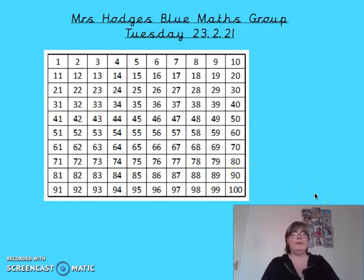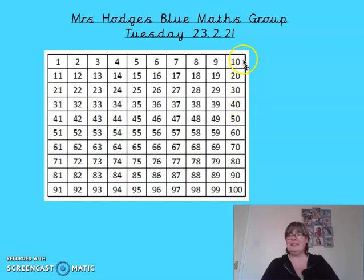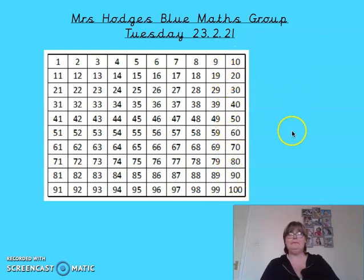Wow, now can we do it backwards? We tried this yesterday so let's see if we can count backwards: 100, 90, 80, 70, 60, 50, 40, 30, 20 and 10. Remember, all that's happening is our tens are going down by one each time. Well done.